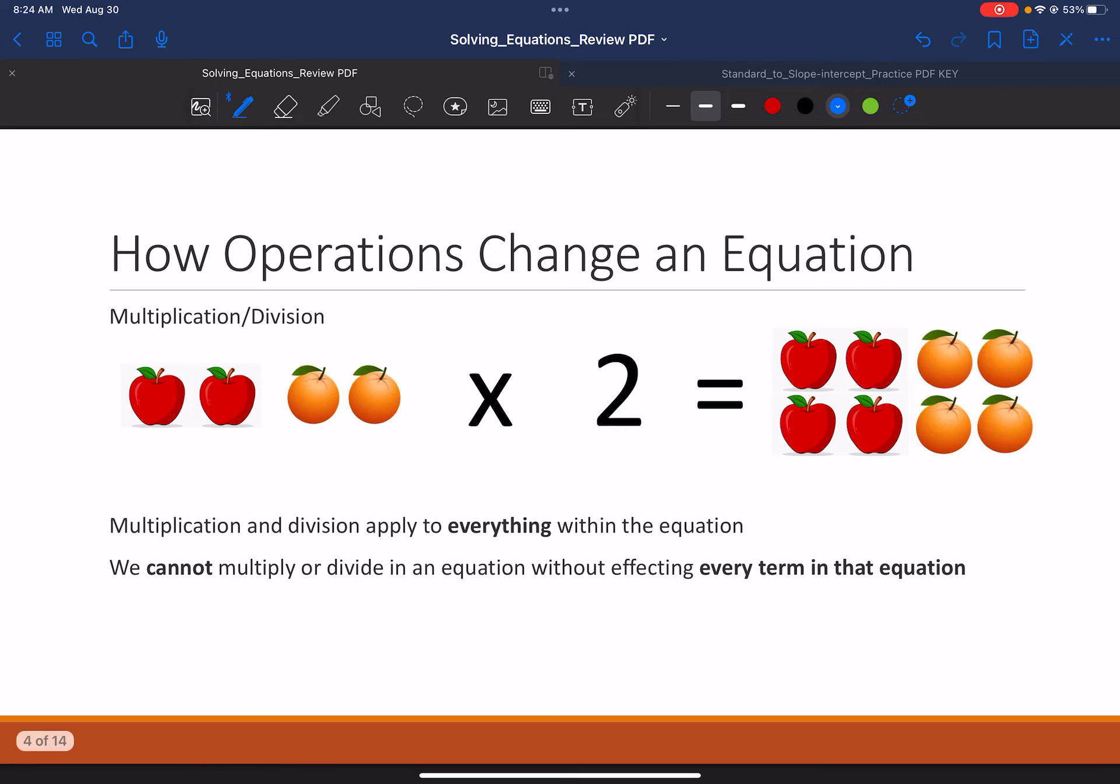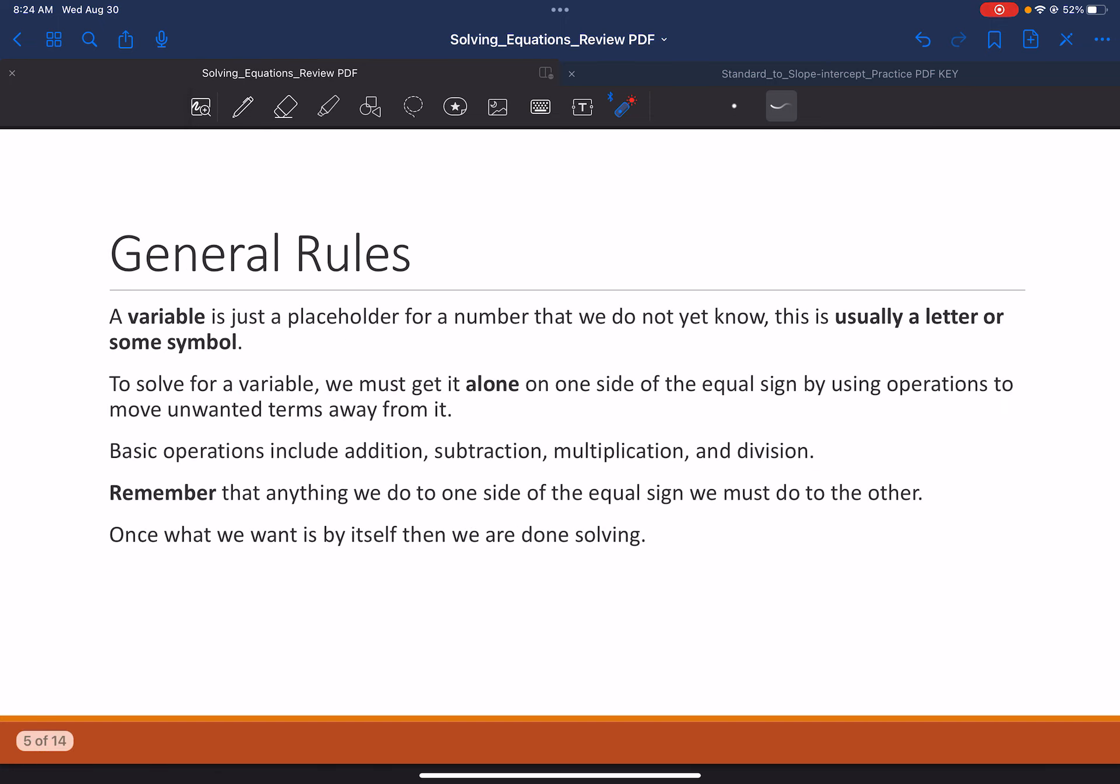Now, what about multiplication or division? For that, if we multiply an equation, we have to multiply the entire equation. We can't just multiply part of it. So, if we have two apples and two oranges, and it's being multiplied, then our result is going to be twice the number that we started with for each of those things.